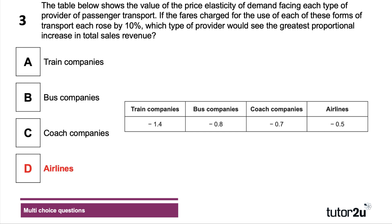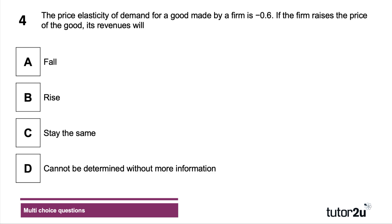Train companies would see a fall in revenue; bus and coach companies would see revenue rise, but airlines would see the biggest rise because their price elasticity is only 0.5. For example, a 10% increase in fares would only cause a 5% fall in demand, so total revenue goes up.